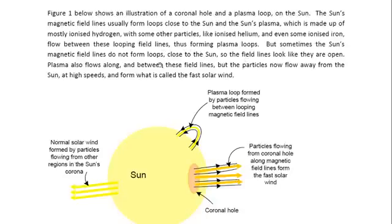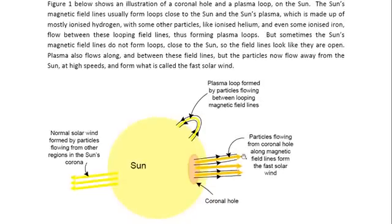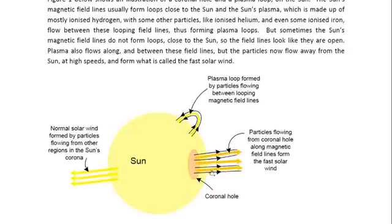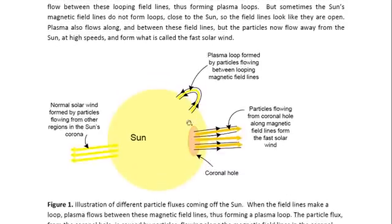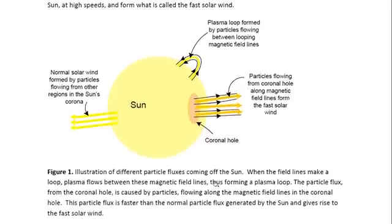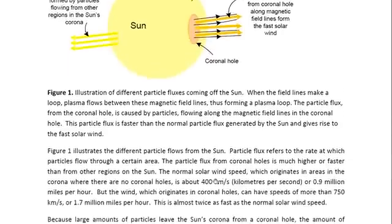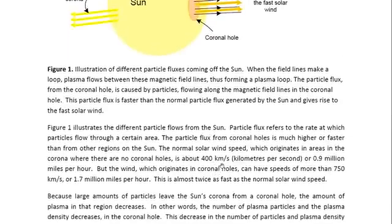But sometimes the Sun's magnetic field lines do not form loops close to the Sun. Instead, the Sun's magnetic field lines flow straight out from the surface of the Sun. And at these points on the Sun, what forms is what we call a coronal hole. Particles flow very fast, they actually spiral along these magnetic field lines away from the Sun. What that does is it causes an area of lower density to form on the Sun. And this area, because of the lower density, also has a lower temperature. And because it has a lower temperature, it will look darker than the rest of the surface of the Sun.